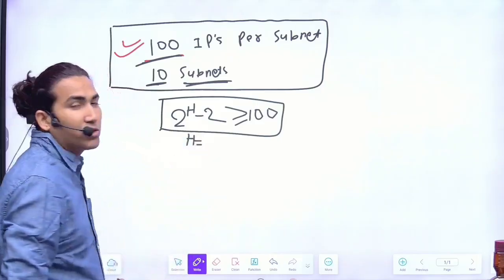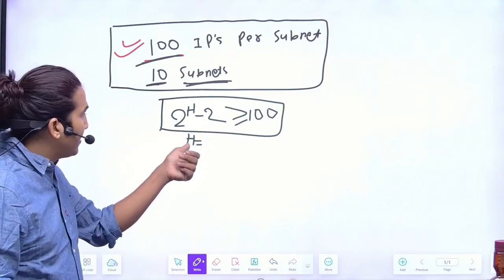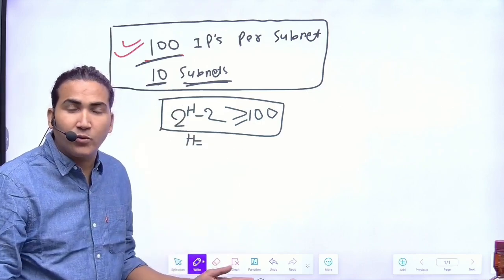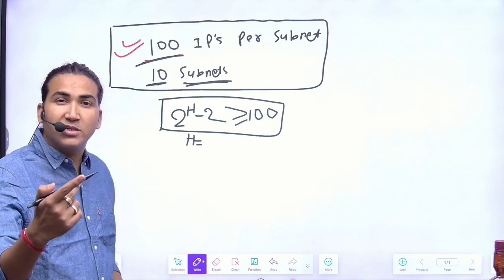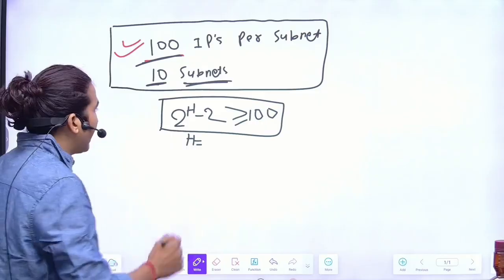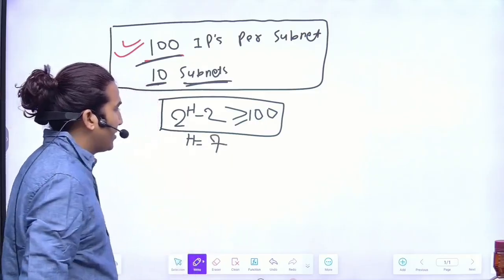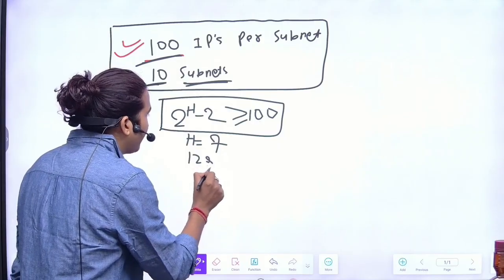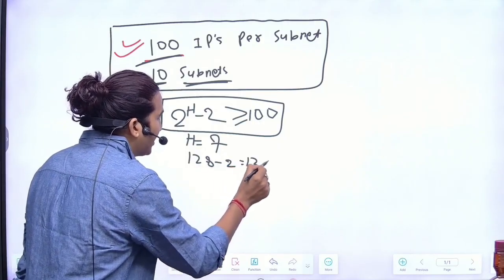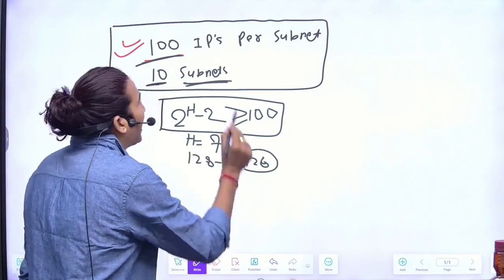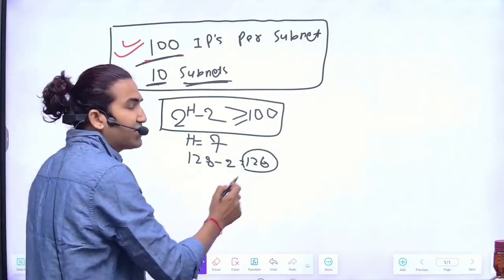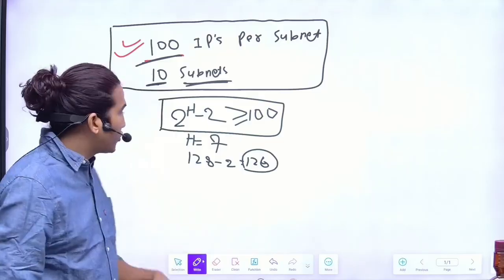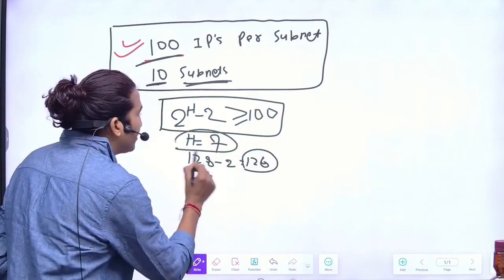h should be definitely what? Will h equals 5 work? No. 2 power 5 is 32 minus 2, no. Will 6 work? No. 2 power 6 is going to be 64, not going to work. h should be 7. So host bit is 7. 2 power 7 is going to be 128 minus 2 means 126. That is fine. I need 100 IP addresses, I will get 126 IP addresses. It will work for me.